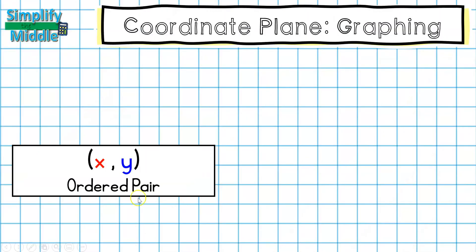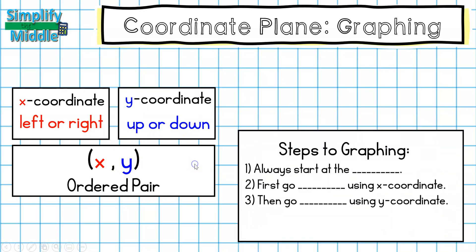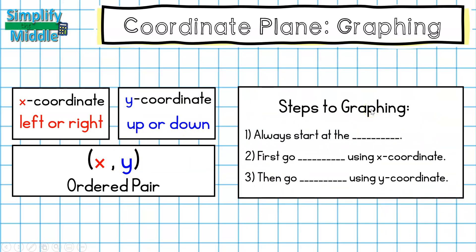Let's wrap up. We talked about how this is an ordered pair and that the first number in our ordered pair is the x-coordinate, which tells us to go left or right first. And the second part of our ordered pair is our y-coordinate, which tells us to go up or down second. Our steps to graphing were to always start at the origin. First go left or right using the x-coordinate and then go up or down using the y-coordinate.